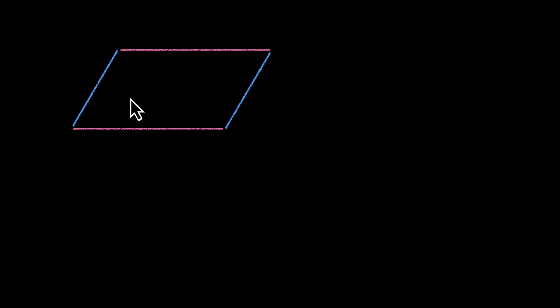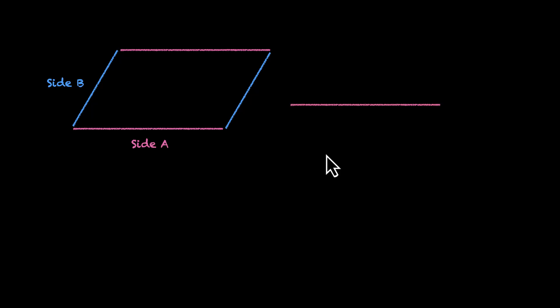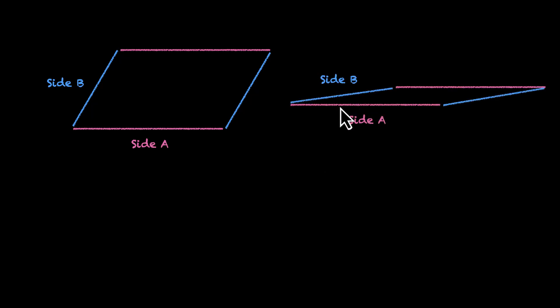In this video, we'll learn how to find area using the cross product. Let's first look at a parallelogram. We have these two parallel sides and these two parallel sides. If the length of these parallel sides are given — if this is side A and this is side B — if you know these two lengths, can you figure out the area? The answer is no, because you can have a different parallelogram with the same two sides. Clearly, these two have a different area. What you need is the height.